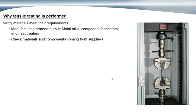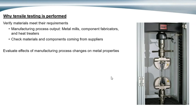People also use tensile testing to verify that the materials and components they're receiving from suppliers meet requirements for yield strength, tensile strength, elongation, and other properties. Additionally, mills, component fabricators, and heat treaters will evaluate the effects of manufacturing process changes on metal properties — perhaps developing new processes or making changes to ensure the new process is resulting in the properties that are needed.